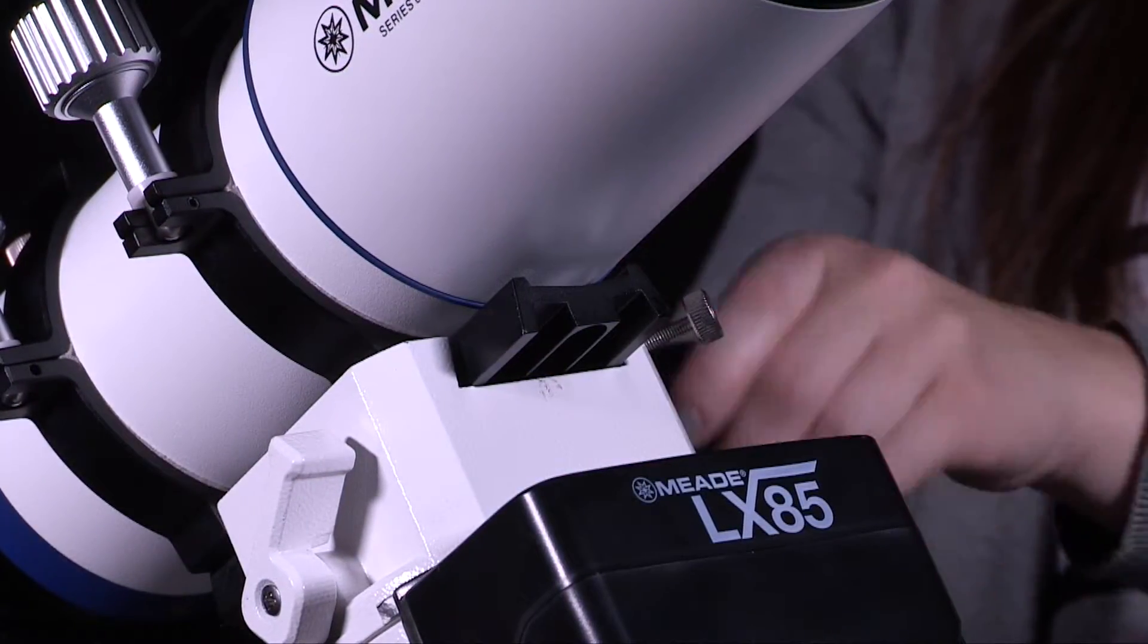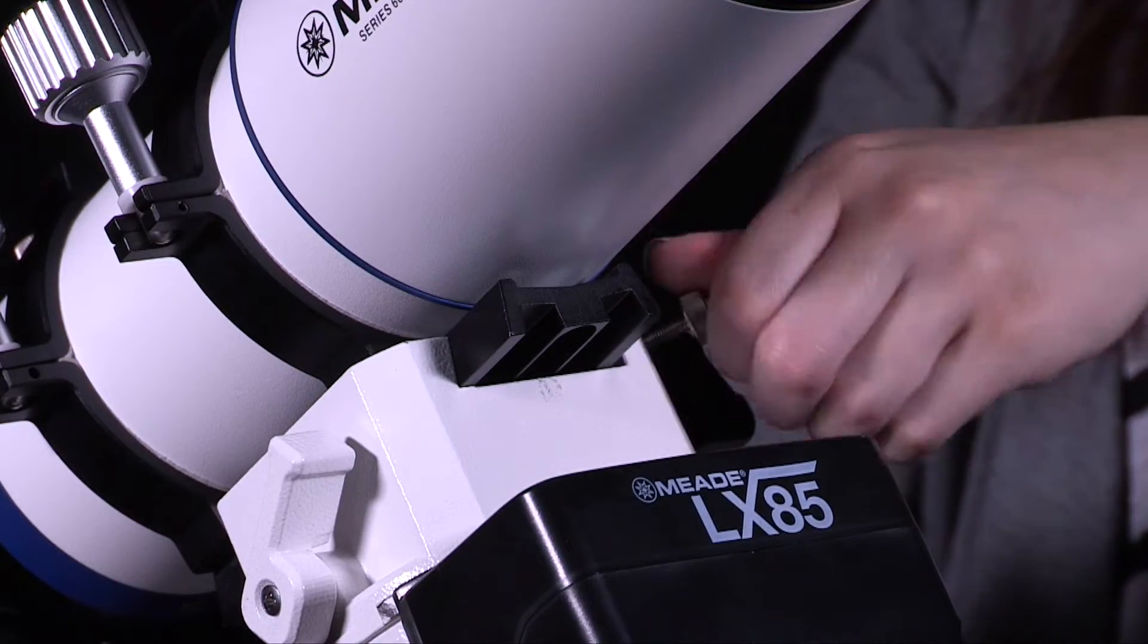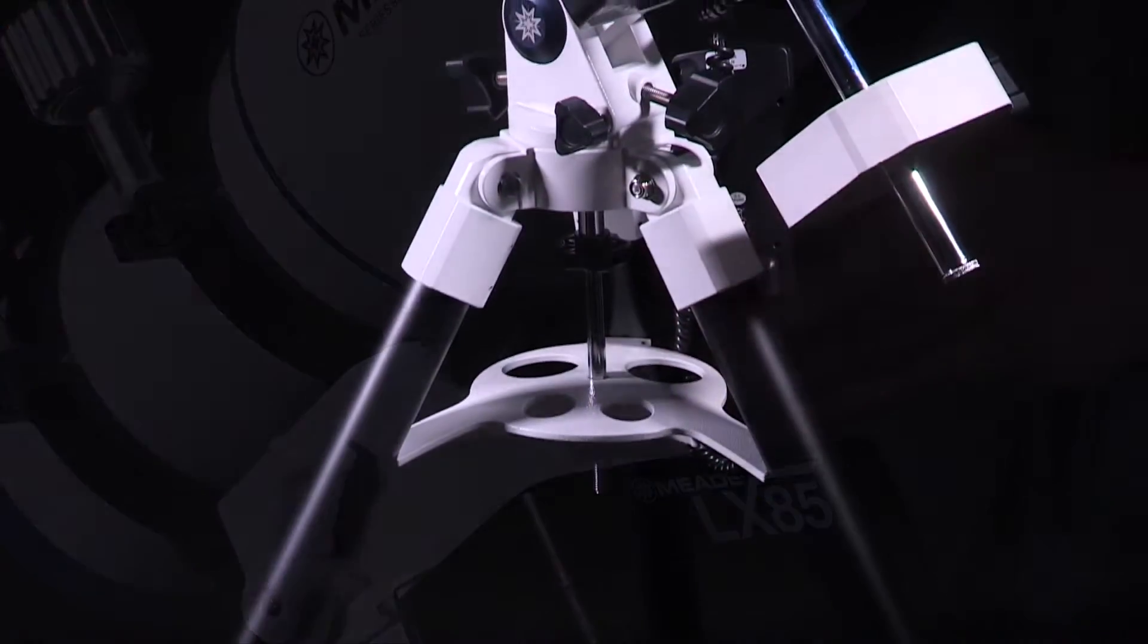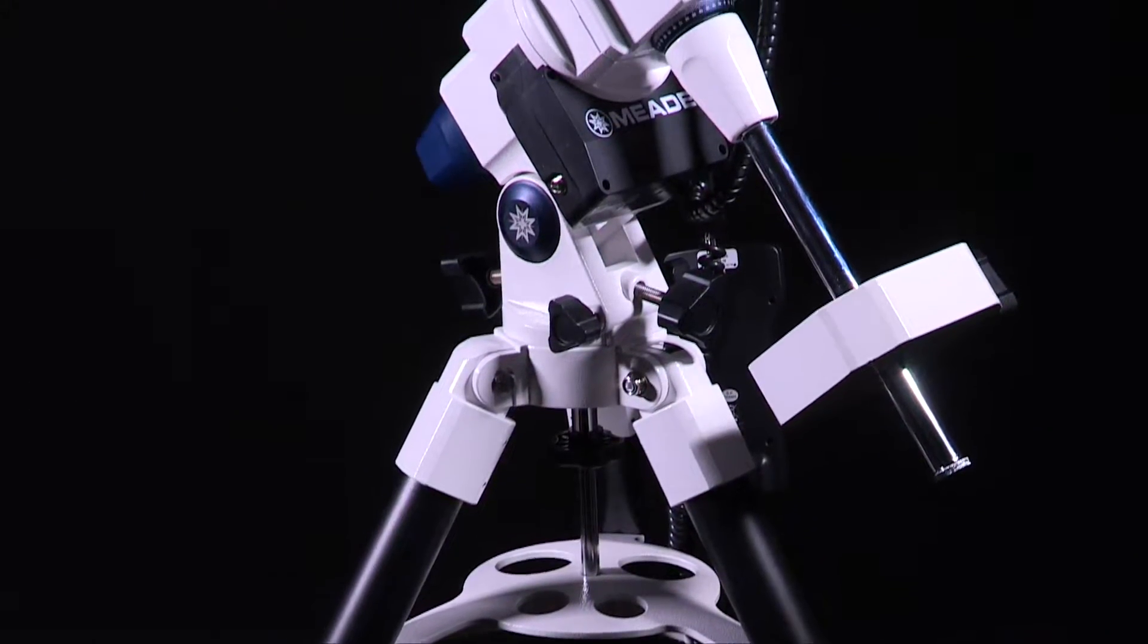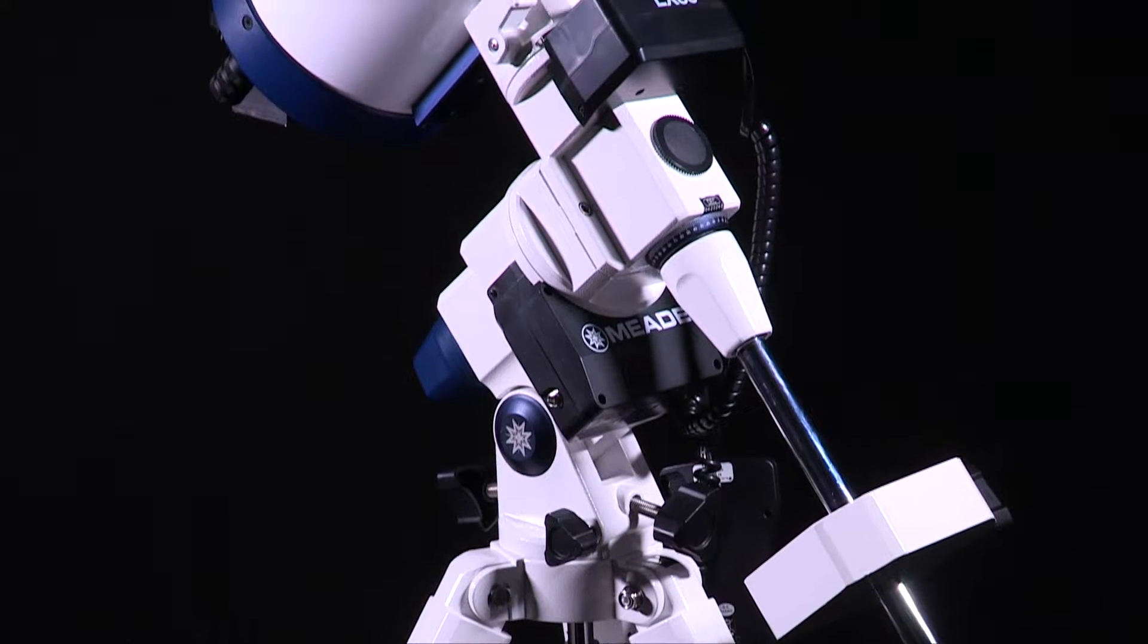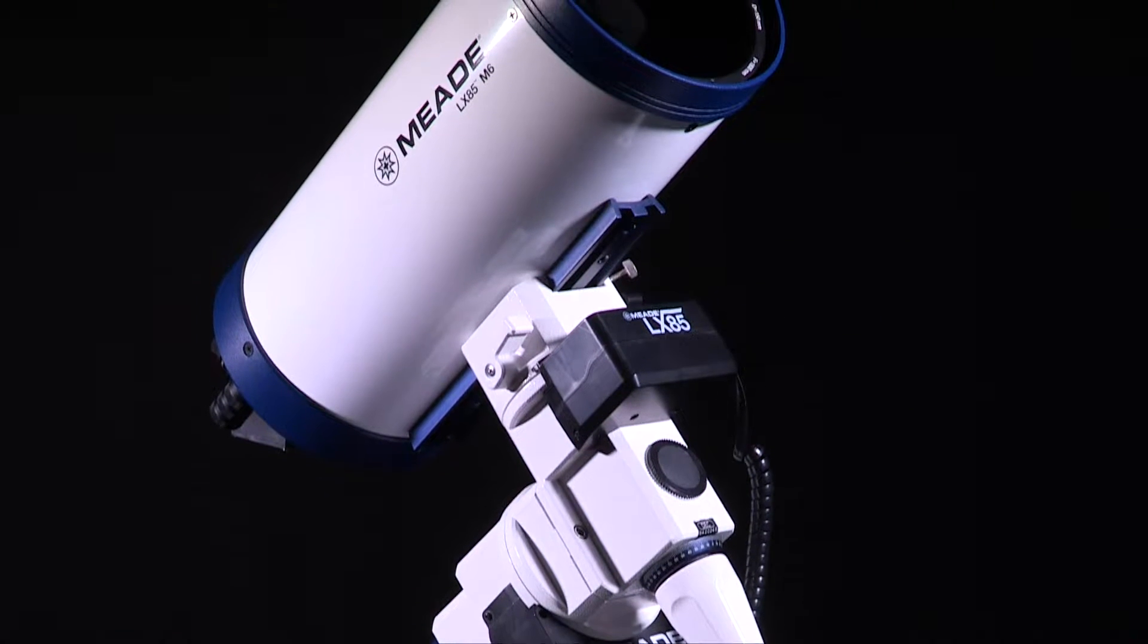The LX85 features a Vixen-style dovetail receiver for mounting observing equipment up to 33 pounds, coupled with a sturdy build and low-cog servomotors that ensure smooth tracking performance. This stable mount can impressively handle slight load imbalances with ease.